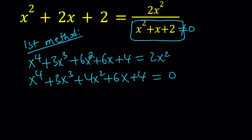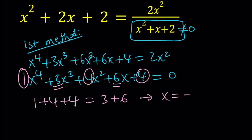One thing that I'd like you to notice here is the following. Let's write the coefficient of x⁴ as 1, and then notice that 1 + 4 + 4, which is 9, is equal to 3 + 6. That basically means that the sum of the coefficients of odd powers of x equals the sum of the coefficients of the even powers of x, which implies that x equals -1 is a solution, which implies x + 1 is a factor.